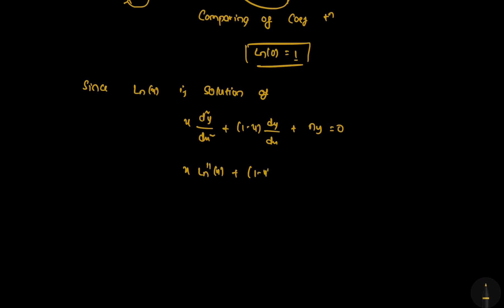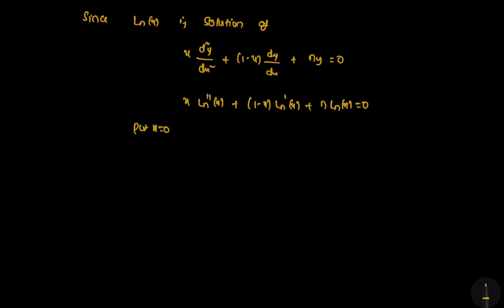Therefore L_n(0) = 1. Now to prove L_n'(0) = -n: from the generating function, differentiating with respect to x and then putting x = 0: plus (1-0) · 1 · L_n'(0) + n · L_n(0) = 0. Since L_n(0) = 1, we get L_n'(0) + n · 1 = 0.